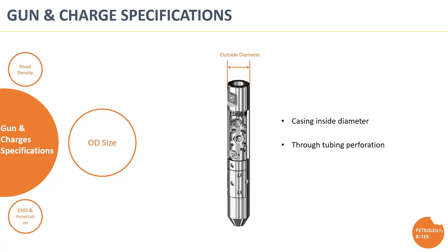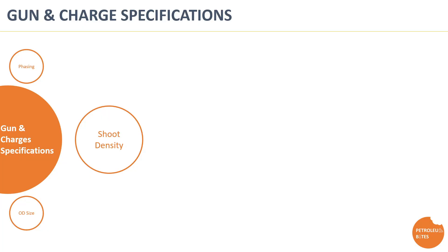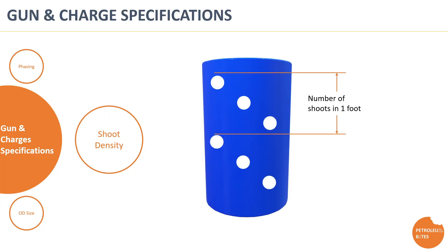In through-tubing perforation, the selection of the gun is decided based on the maximum outside diameter that can pass through the minimum inside diameter of the wellbore. There are many gun sizes ranging from 1-11/16 inches up to 7 inches. Moving on to the next specification: shooting density refers to the number of perforation shots per unit of length, typically measured as shots per foot or sometimes shots per meter. Shooting density has a direct effect on the flow coming from the reservoir rock.